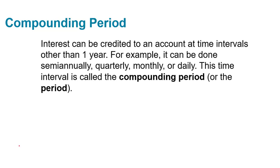In order to calculate compound interest, you have to know the compounding period. Interest can be credited to an account at time intervals other than a year. For example, it could be done semi-annually, quarterly, monthly, or daily. The time interval is called the compounding period.